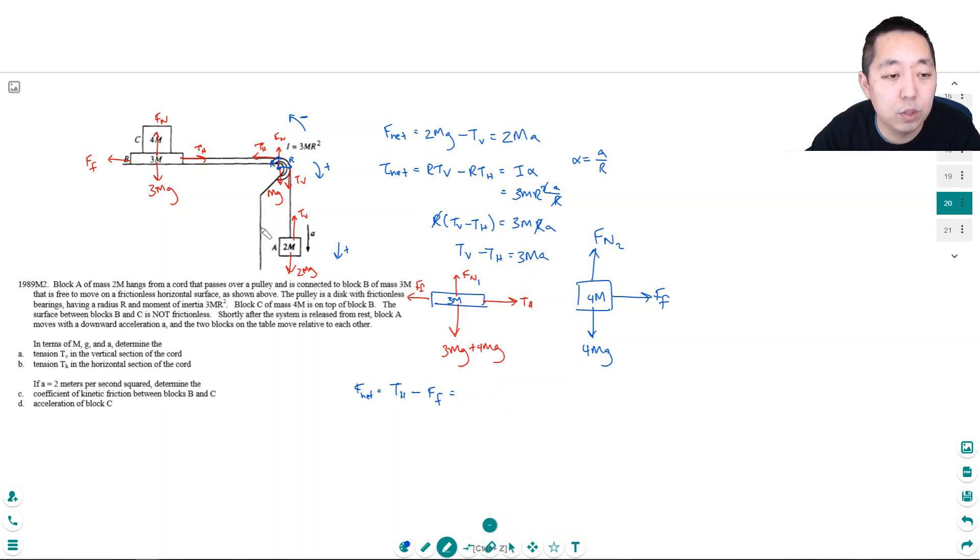Because I want the normal force between these two blocks. I don't want the force that the table is pushing back on here. To find this frictional force, it's due to the normal force of these two blocks pushing against each other. So this is just equal to 3M times A. And this A is the same as the A because everything is moving together in tandem. They're going to have to move at the same acceleration.